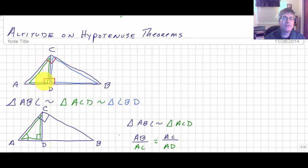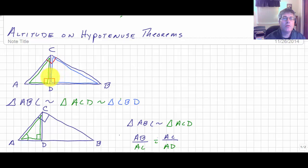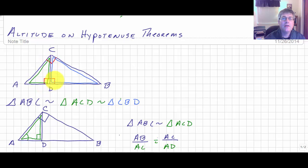We have the green triangle on the left and the blue triangle on the right. The big triangle ABC is similar to the green triangle ACD, which is similar to the blue triangle CBD.